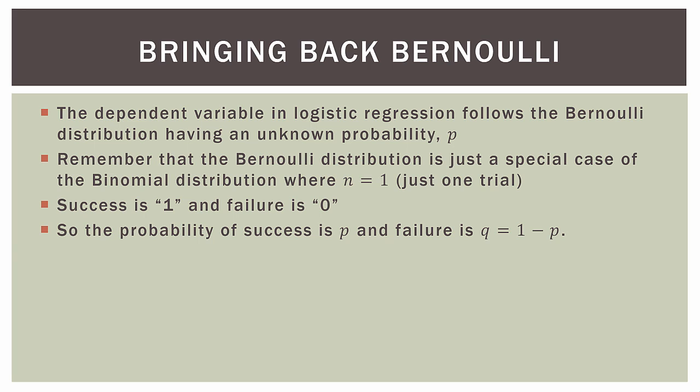We've seen that before in the previous video. Remember in odds, p is on top, and below that we have one minus p. So in the context of Bernoulli, the odds are p divided by q, because mathematically they're the same thing.